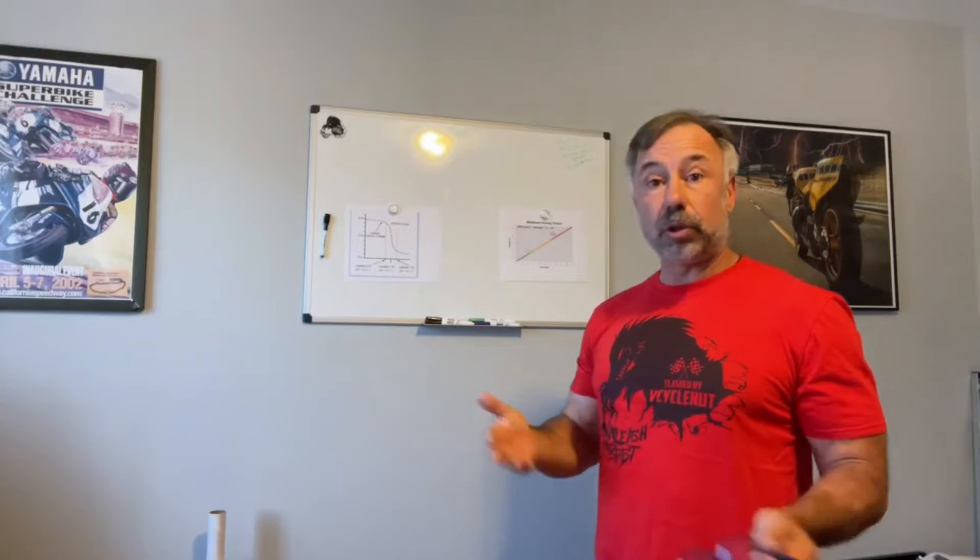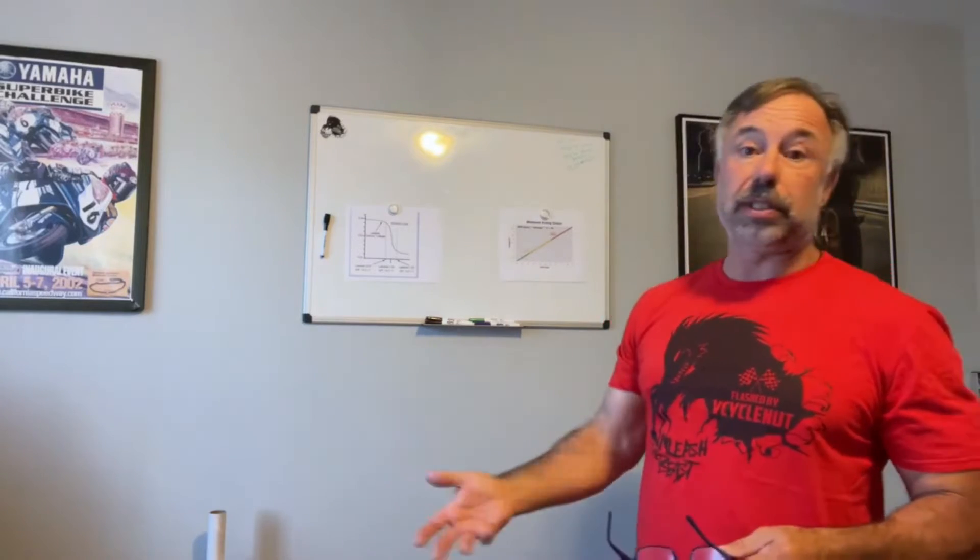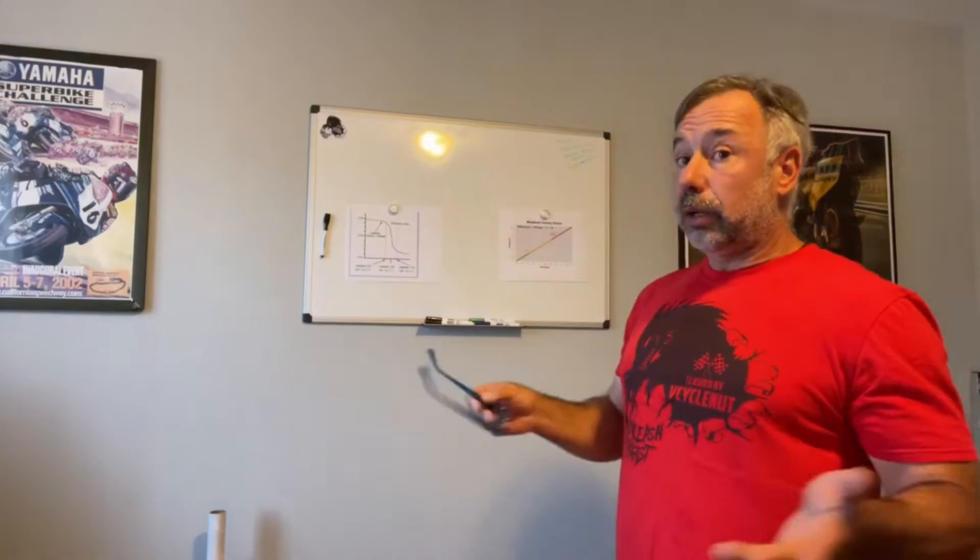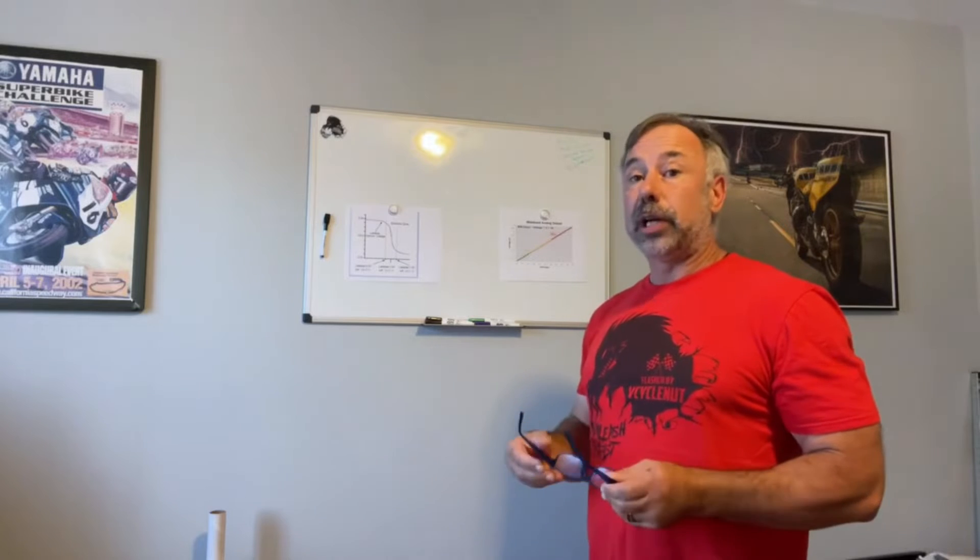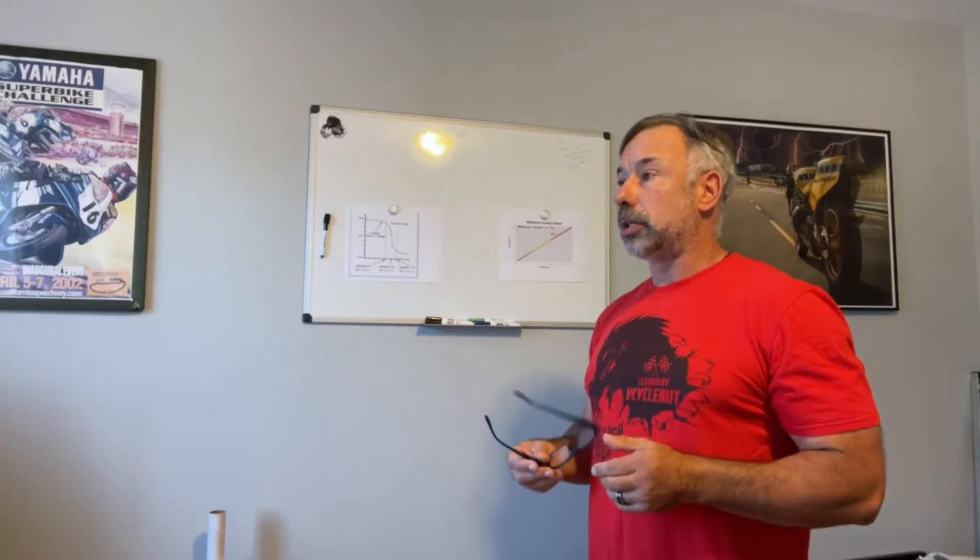So as you get richer, you get more fuel, so you get 12 and a half or 12 parts of air to one fuel. And if you get leaner, the number would go higher. So a higher number is leaner, a smaller number is richer. And we're generally looking for a number depending on where we're tuning for best power for a naturally aspirated, usually in the low 13s.